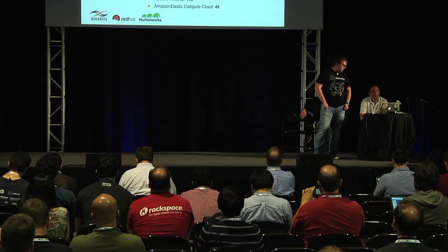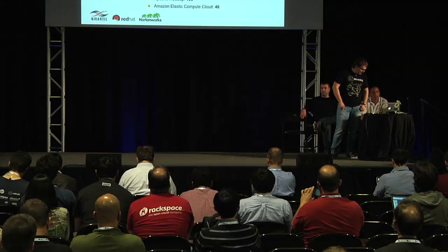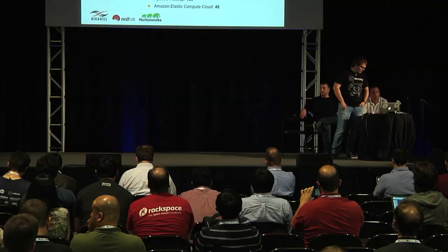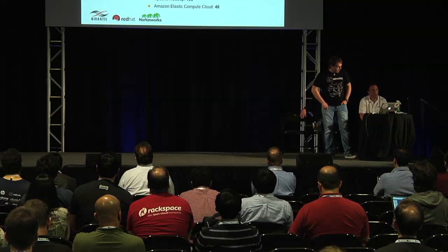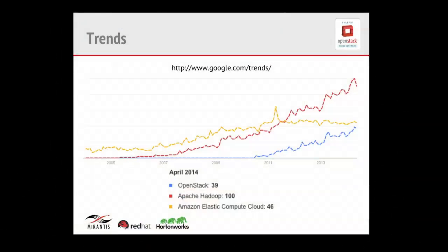Let's look at why it's a good idea to bring Hadoop to OpenStack. There are three lines on the chart: the blue line is OpenStack growth, the red one is Apache Hadoop, and the yellow one is Amazon Elastic Compute Cloud. Amazon contains a product named EMR, which is similar to our concept of elastic data processing in Sahara. Apache Hadoop started much earlier than OpenStack, but both products have the same angle of growth — that's why we think it's a great idea to merge our communities and bring Hadoop to OpenStack.